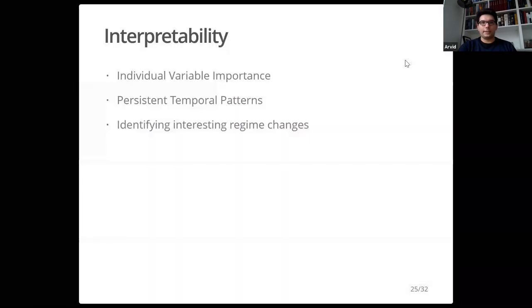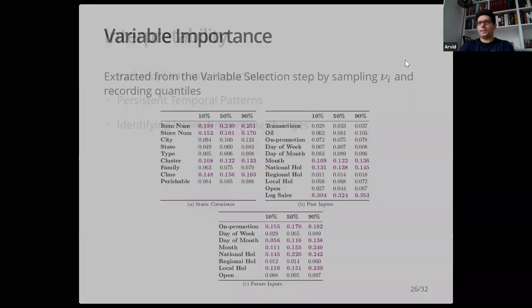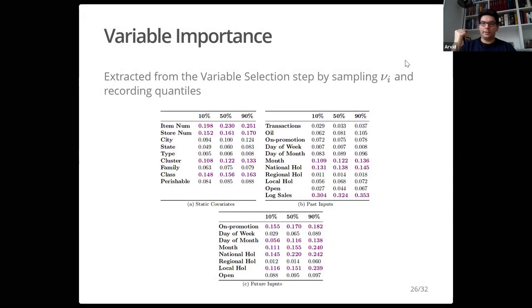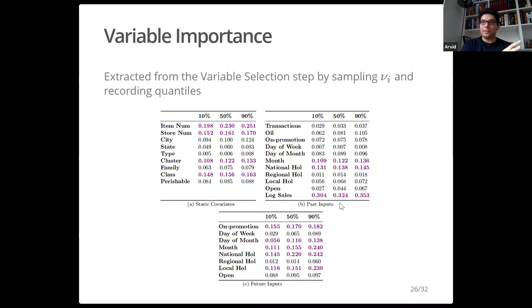The gist of the paper was interpretability — what can we learn by looking at the attention patterns? Variable selection already tells us which variables are important. Looking at results from the retail dataset, you see confirmation that variables like national holidays and past sales are indeed important, as expected. Past sales being important is also where classic methods like ARIMA would fare fairly well.